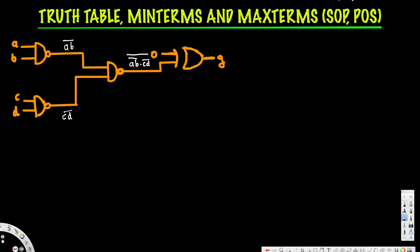This output is going to go through an XOR gate. The other input of the XOR gate is connected to ground, so that input is zero.